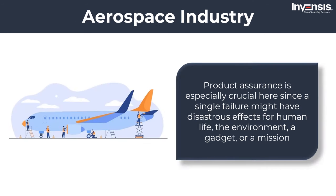In the aerospace industry, product assurance, or PA, is a phrase commonly used instead of quality assurance, and is one of the three core project responsibilities, along with project management and engineering. Quality assurance is especially crucial since a single failure might have disastrous effects on human life, the environment, a gadget, or a mission. It has organizational, budgetary, and product development independence, which means it reports solely to the highest levels of management, has its own budget, and does not use labor to assist in creating a product. Product assurance is on par with project management, except it emphasizes the customer's perspective.